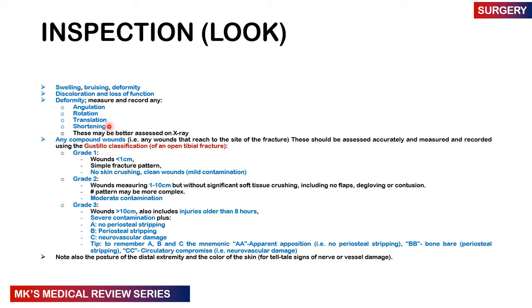Grade any wound present using the Gustilo-Anderson classification for open tibial fractures. Grade 1: wounds less than 1 cm with a simple fracture pattern, no skin crushing, clean with mild contamination risk. Grade 2: wounds between 1–10 cm without significant soft tissue crushing, no flaps, degloving, or contusions, more complex fracture pattern with moderate contamination. Grade 3: anything greater than 10 cm or older than 8 hours and severely contaminated — 3A with no periosteal stripping, 3B with periosteum stripped, and 3C with neurovascular damage.